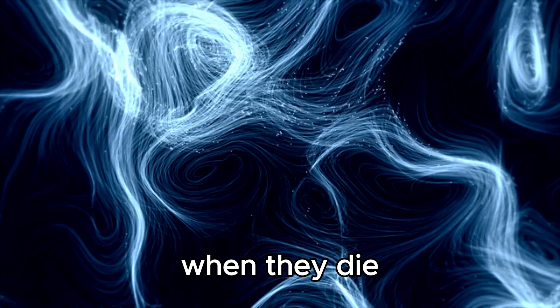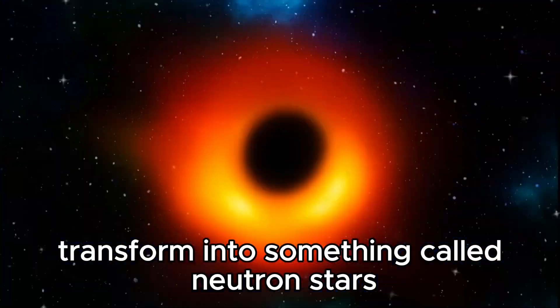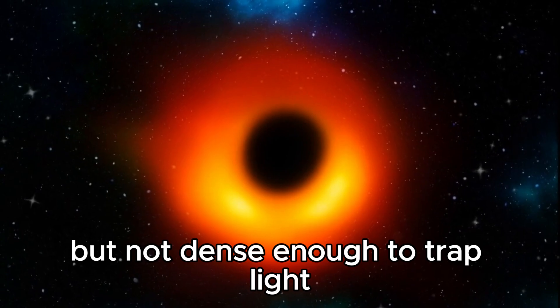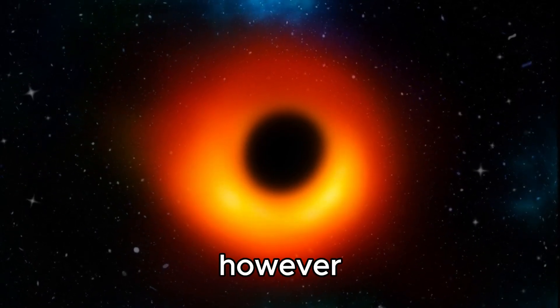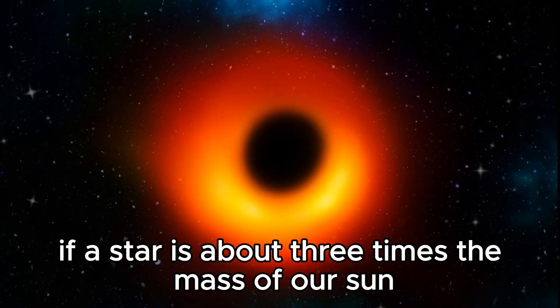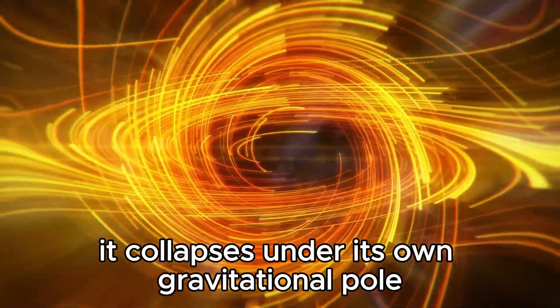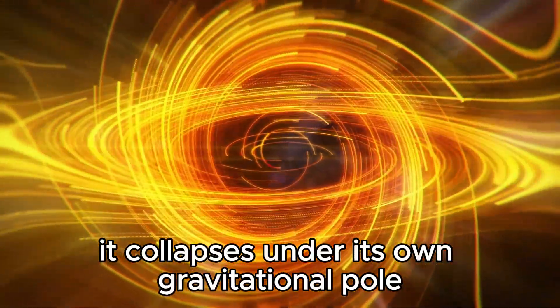Smaller stars, when they die, transform into something called neutron stars, which are super dense but not dense enough to trap light. However, if a star is about three times the mass of our sun, it collapses under its own gravitational pull, forming a black hole.